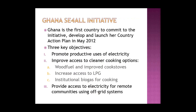Ghana was the first country to develop and launch an action plan in May 2012, with three key objectives based on scoping of ongoing initiatives. Ghana is focusing on: promoting productive uses of electricity; improving access to cleaner cooking options through three key interventions — improved cook stoves, increased access to LPG as a cleaner cooking option, and promotion of institutional biogas for cooking.